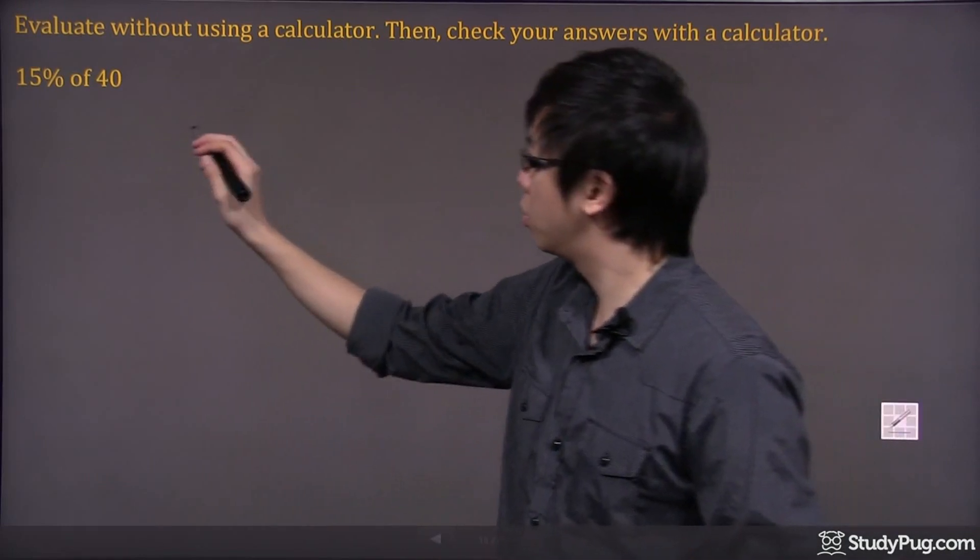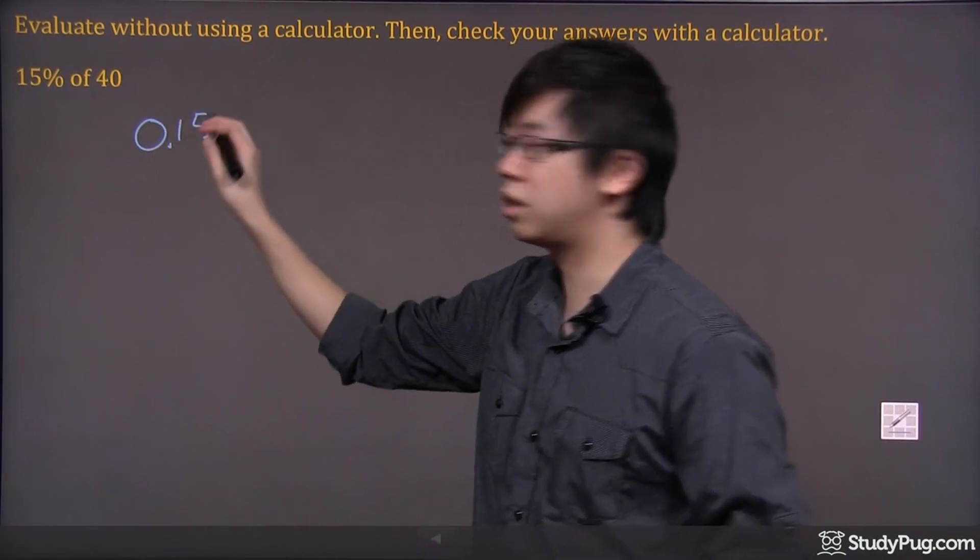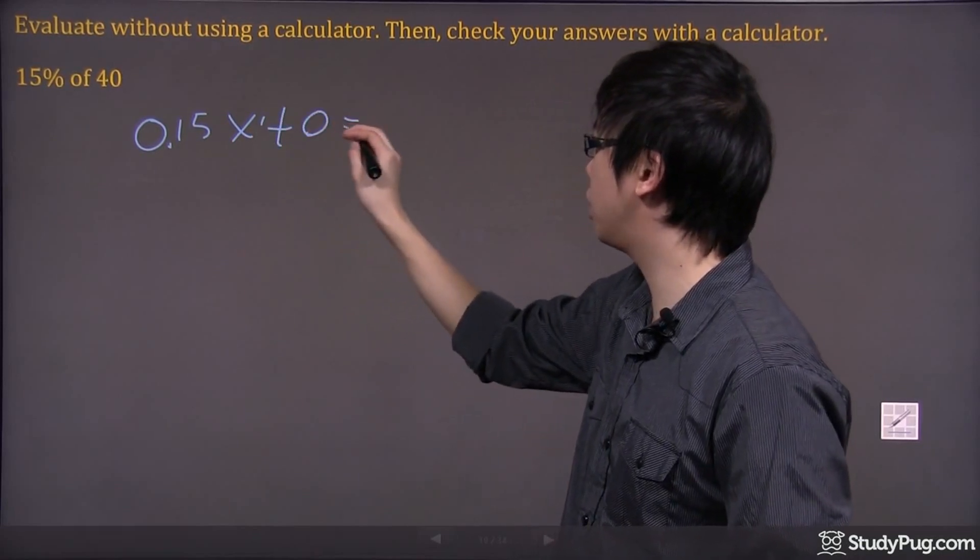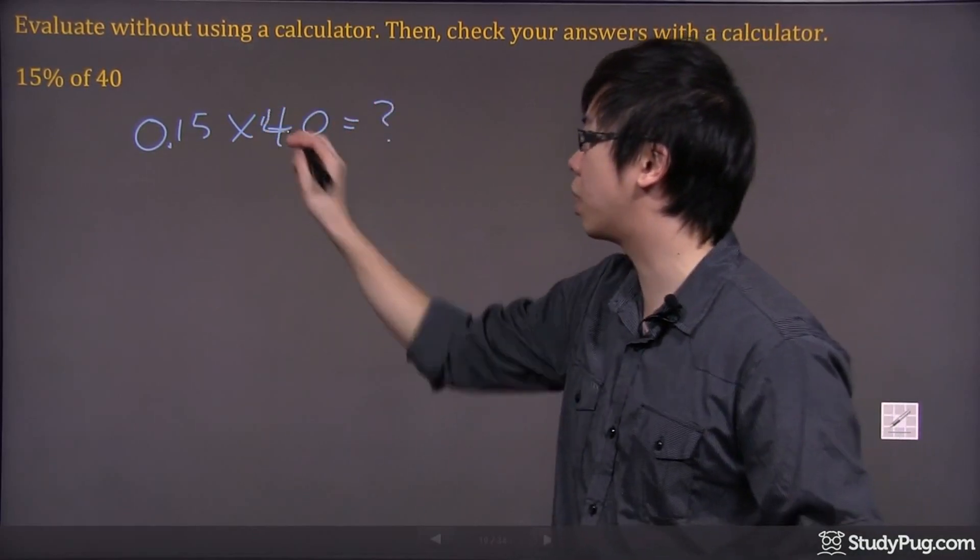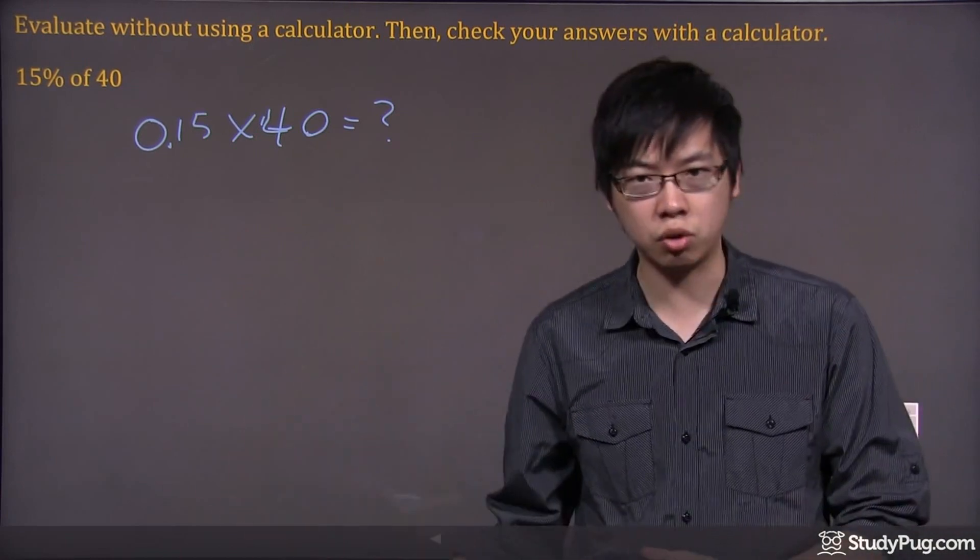15% of 40. A couple of ways we can do this is take 0.15, the decimal form of 15%, and times by 40. But the problem is we still need the calculator to figure this out because we don't know what it is. You're going to have to do your multiplication by hand.